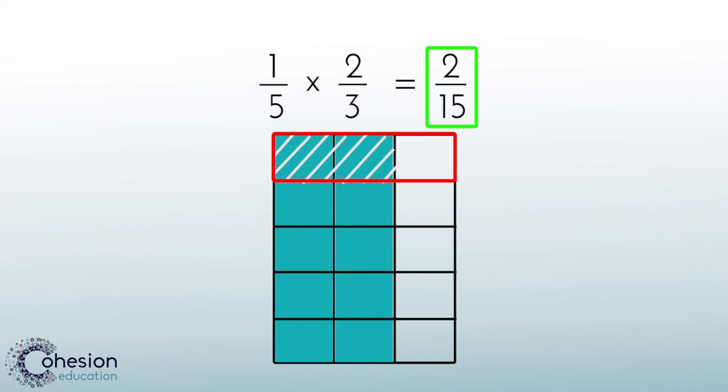Remember, it can be a difficult concept for students to grasp that the product of two fractions turns out smaller than either of the factors. It is important to continue to stress that when multiplying fractions, we are aiming to find a fractional part of what is already a fractional part. Basically, we are looking for part of a part.